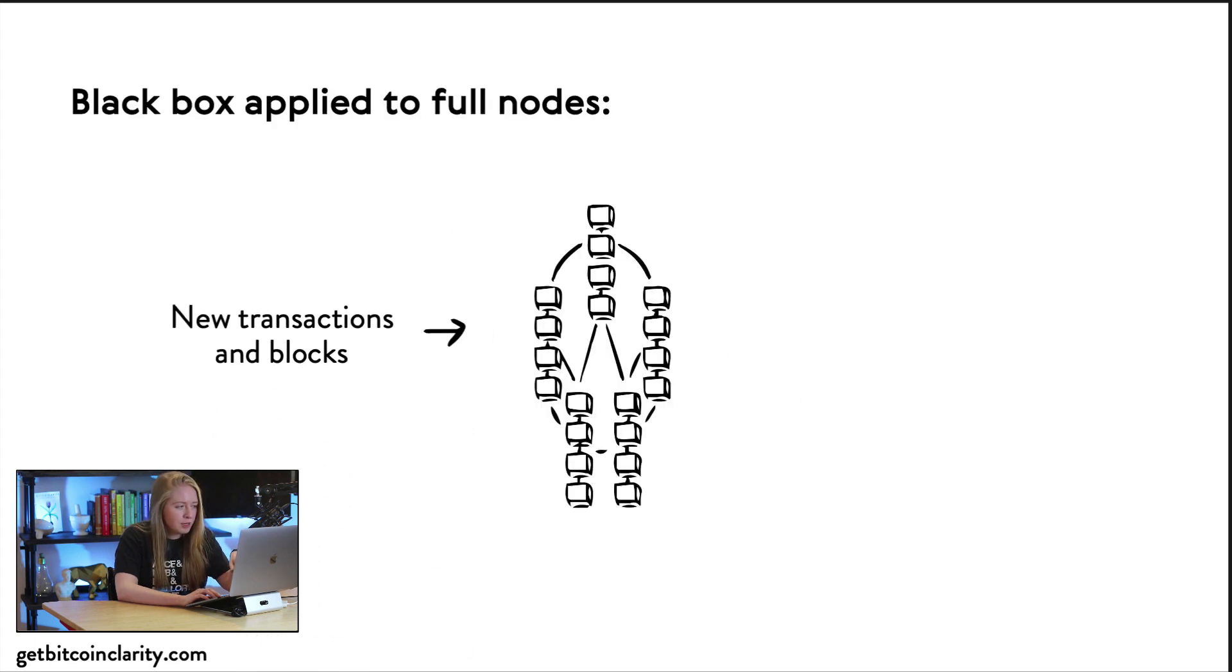In Bitcoin we could say, okay, full node - the function of full nodes is to take in new transactions and blocks and then validate those transactions and blocks. Suddenly you understand why full nodes exist - they exist as validating entities in this system. They validate transactions and blocks. We have no idea what that means yet, but that's okay. The black box allows us to first understand why we have full nodes, then in a later video we could talk about how full nodes work.